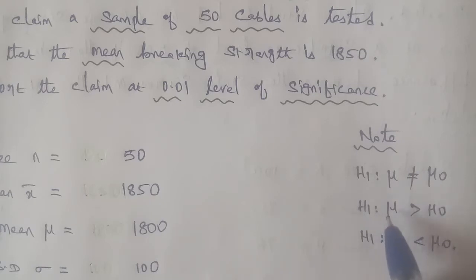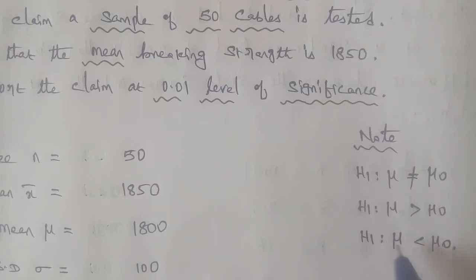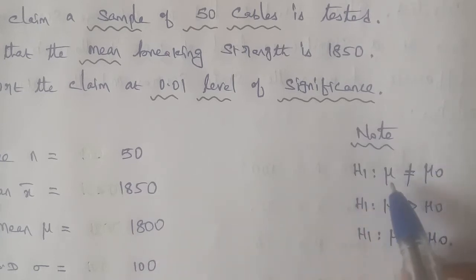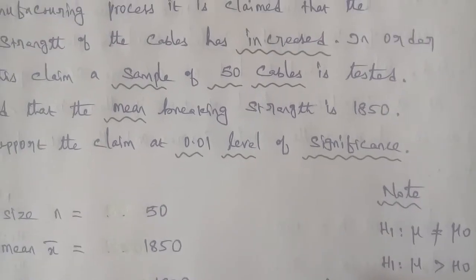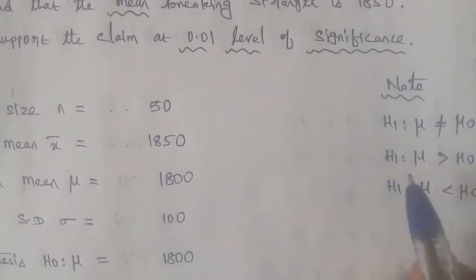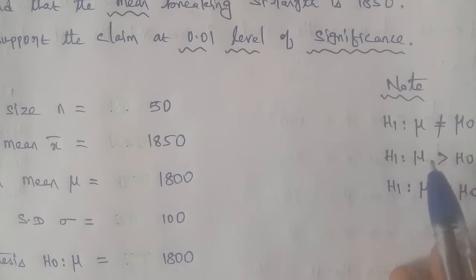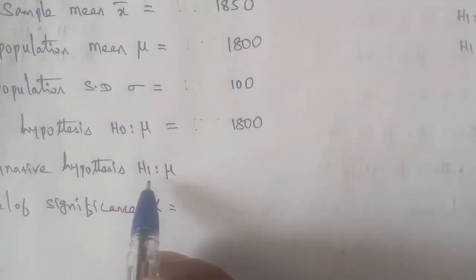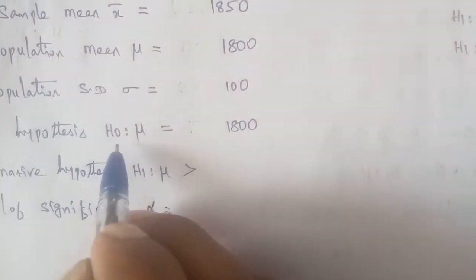H1: mu greater than mu-naught — this is a right-tail test. If H1: mu less than mu-naught, it is a left-tail test (decrease). If H1: mu not equal to mu-naught, it is a two-tail test. Given question says increase, so H1: mu greater than H0 value 1800. This is a right-tail test.